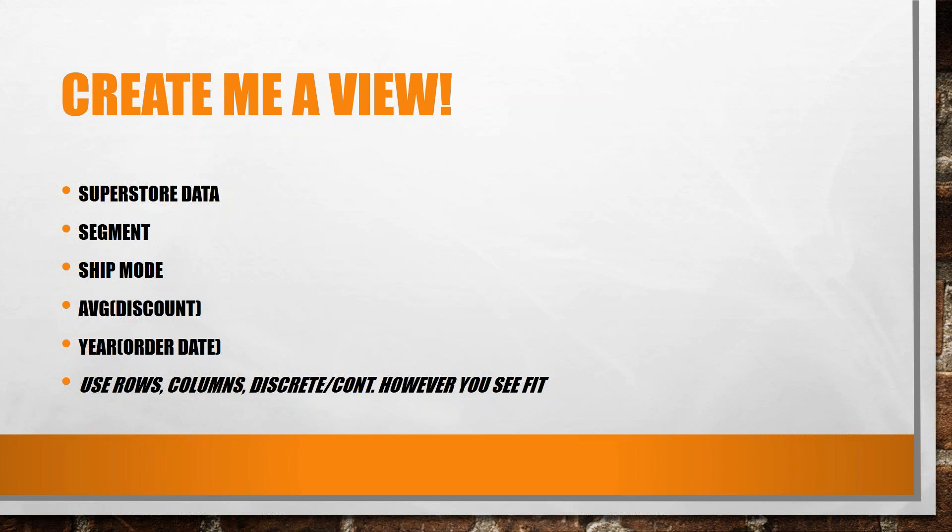This is just to show you a little bit what we've done — average discount and ship mode used as a dimension. When we create a discrete field, we create a section where you can put more data in. Every time I show this, people come up with a different chart trying to visualize what I've asked them to do.